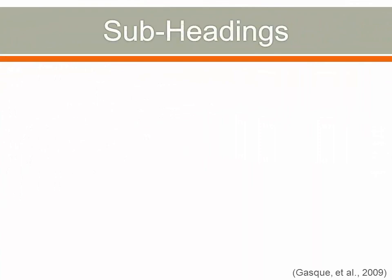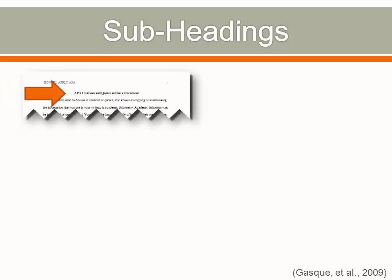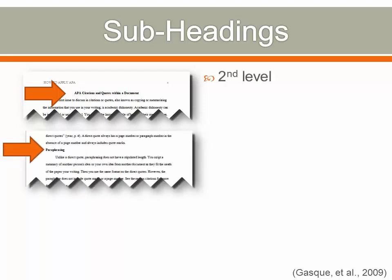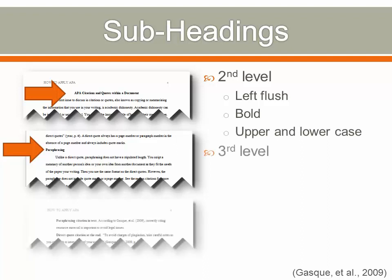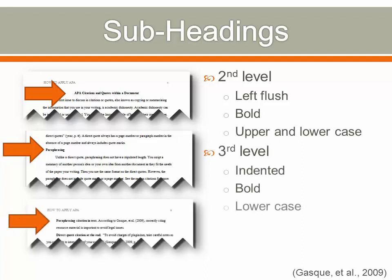Subheadings are used in longer papers to distinguish different topics within a section. The second level heading is placed flush to the left, bold, upper and lower case. If you add an additional level, the third level heading would be indented, bold, lower case with a period. Keep in mind that subheadings require at least two per level. For example, paraphrasing can be a separate subsection from direct quotes; however, if you do not break out a second subsection, then paraphrasing would not warrant a separate heading.